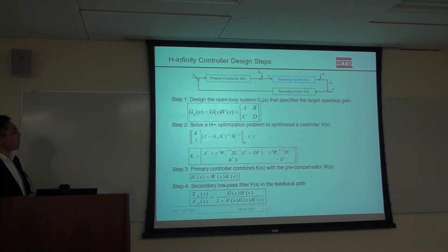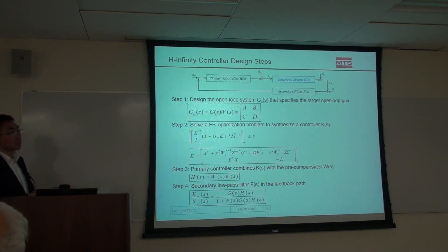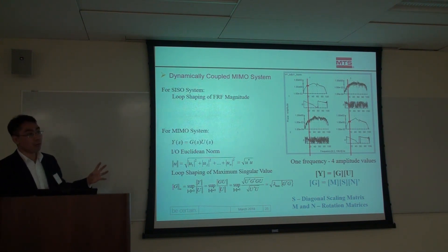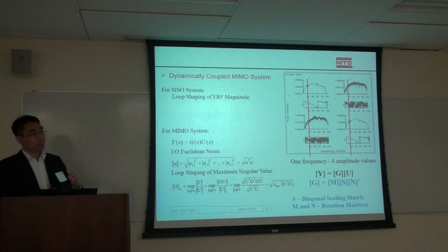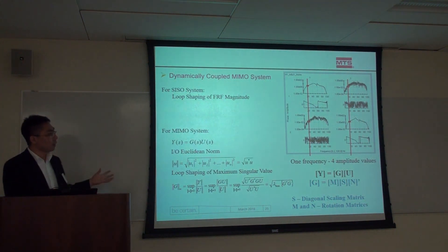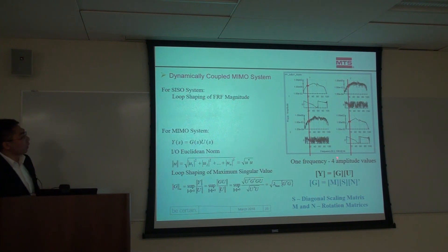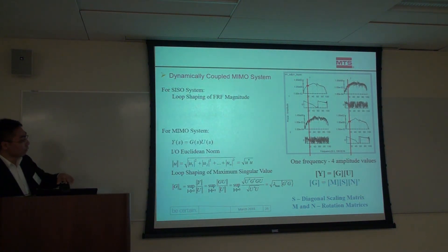The primary H-infinity controller can be formulated as a state-space representation — those algorithms are from control theory, and we are the application users. A particularly nice feature of the H-infinity formulation is that it applies naturally to multiple-input multiple-output (MIMO) systems. Unlike single-input single-output controllers that don't explicitly handle cross-coupling, H-infinity shapes the loop gain using singular value decomposition, working on the maximum singular value for MIMO systems.